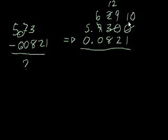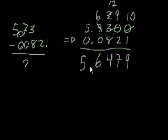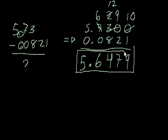And this is the easy part. 10 minus 1 is 9. 9 minus 2 is 7. 12 minus 8 is 4. 6 minus 0 is 6. 5 minus 0 is 5. And we just bring down the decimal point. So there's our answer. 5.73 minus 0.0821 is equal to 5.6479.